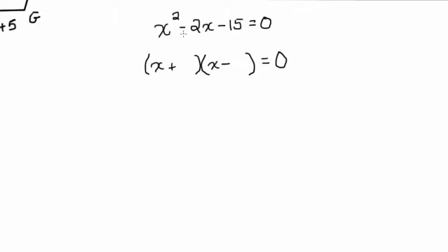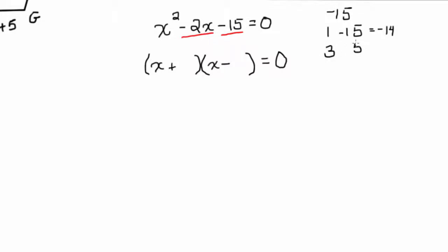The negative in front of the 2 tells us the larger number is going to be negative. We want two numbers that multiply to negative 15 and add to negative 2. Starting with 1 and 15: 1 times negative 15 is negative 15, and 1 plus negative 15 equals negative 14 — not what we want. Next is 3: 3 times negative 5 is negative 15, and 3 plus negative 5 is negative 2. That's exactly what we want.